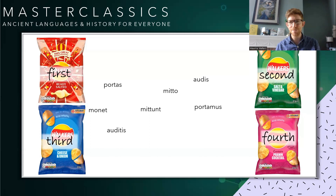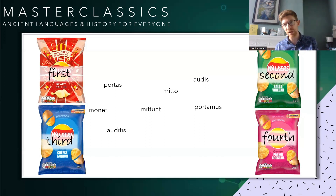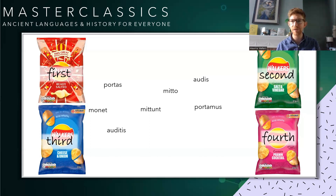Third conjugation verbs like mitto — mitto, mittis, mittit — have the 'i' ending and then end in 'unt'. Then the really weird one, the fourth conjugation, which we gave to the prawn cocktail flavour — the one that divides the nation — audio: audio, audis, audit, audimus, auditis, audiunt. The only difference is the extra 'i' in the first person and the 'unt' in the third person plural.